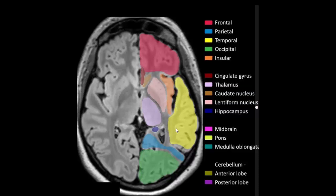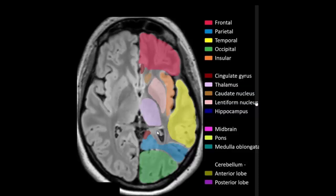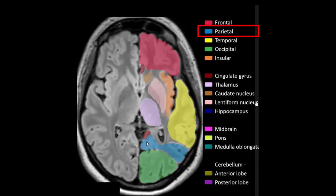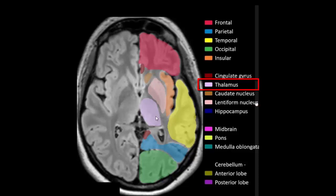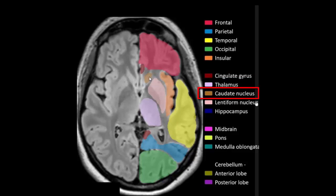Frontal lobe, temporal lobe, parietal lobe, occipital lobe, insular cortex, lentiform nucleus, thalamus, cingulate gyrus, head of caudate nucleus.